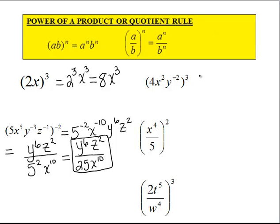Moving on, we have 4x squared, y to the minus 2, all raised to the third. So we have 4 to the third, x to the sixth, since 2 times 3 is 6, and y to the minus 6, since negative 2 times 3 is negative 6.